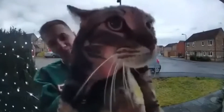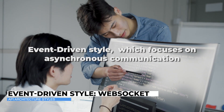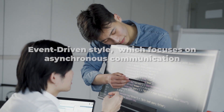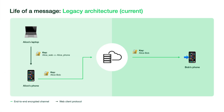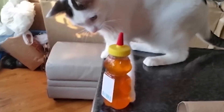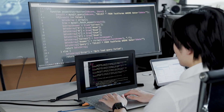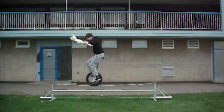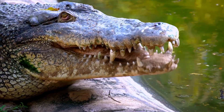Let's shift gears and talk about the event-driven style, which focuses on asynchronous communication. WebSocket is the chatterbox of API styles — it's like having a phone line constantly open between your app and the server. WhatsApp Web uses this to make sure you never miss a message, even if it's just your mom sending you the 100th cat video of the day. It's great for real-time updates, but maintaining all those connections can strain server resources, like trying to juggle while riding a unicycle on a tightrope over a pit of hungry alligators.